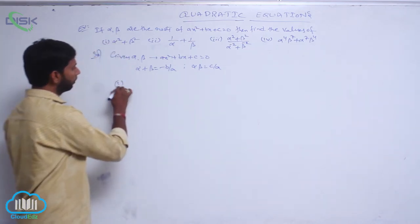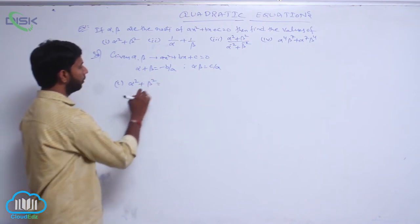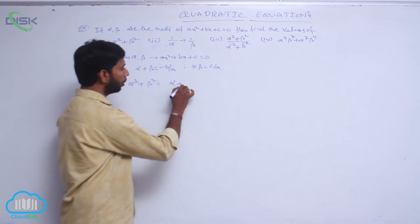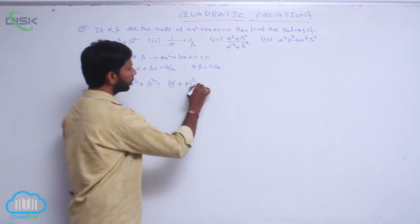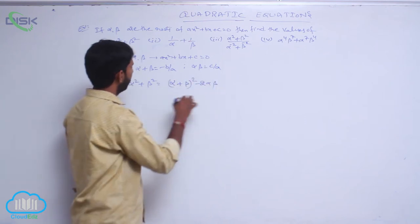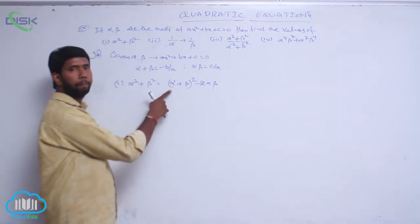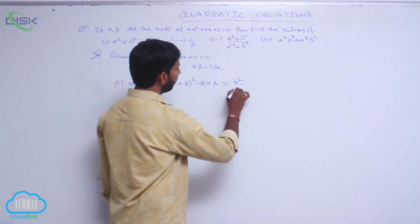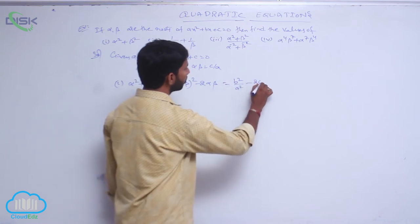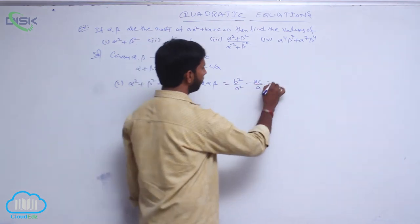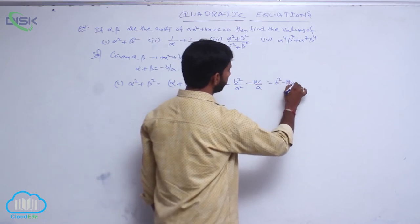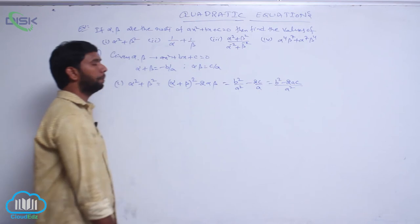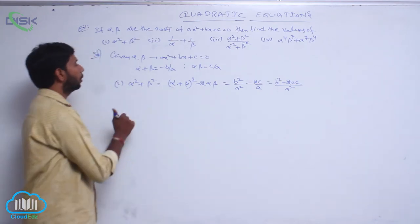For the first one, alpha squared plus beta squared is of the form a squared plus b squared, which can be written as (a plus b) whole squared minus 2ab. So it equals (minus b by a) whole squared minus 2(c by a), which after taking LCM gives b squared minus 2ac, all over a squared.